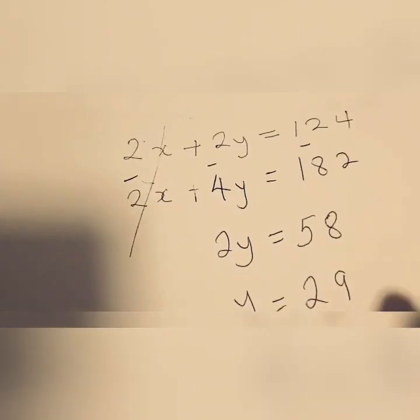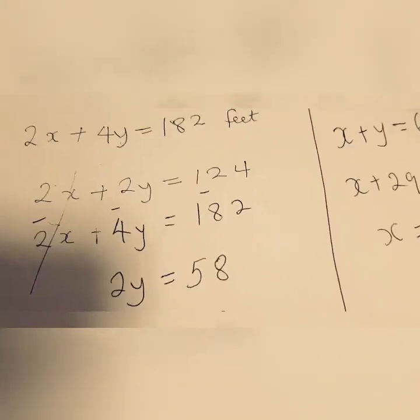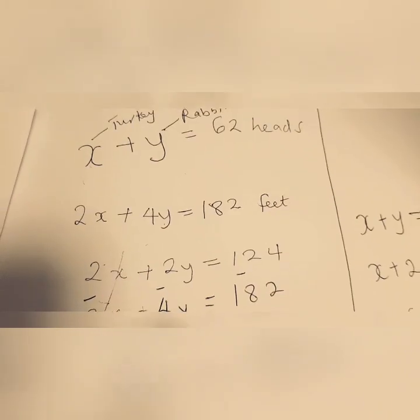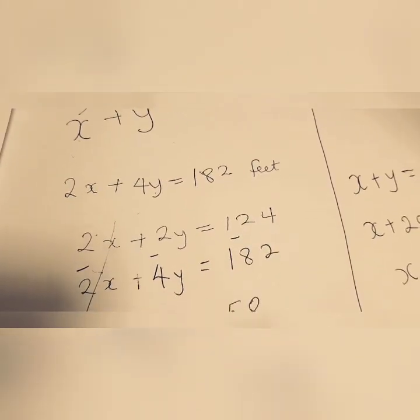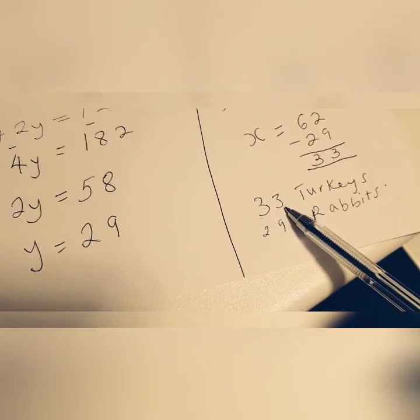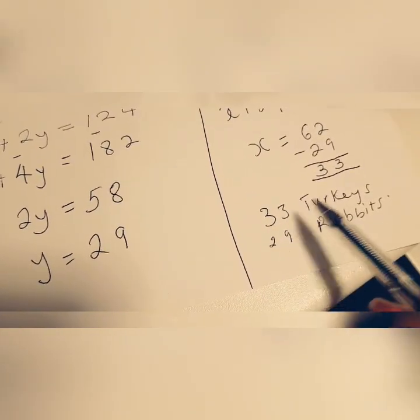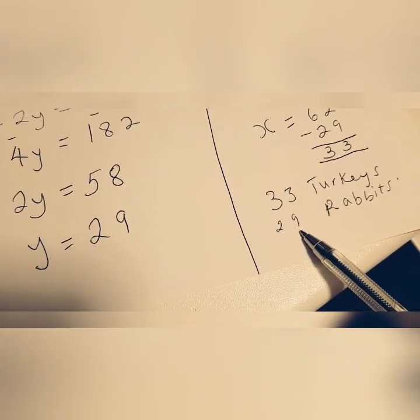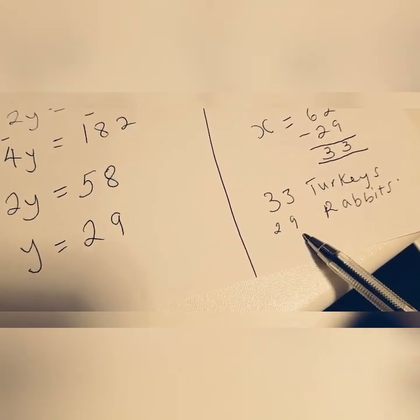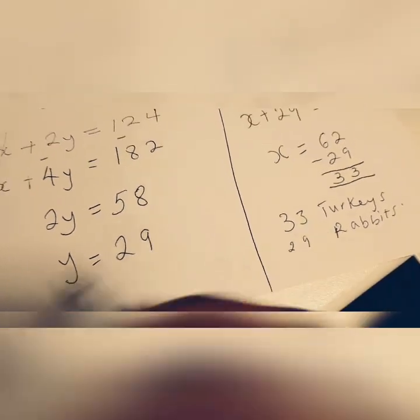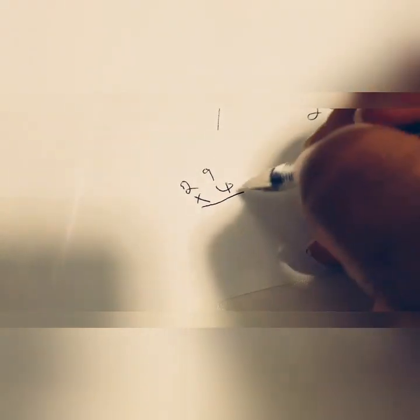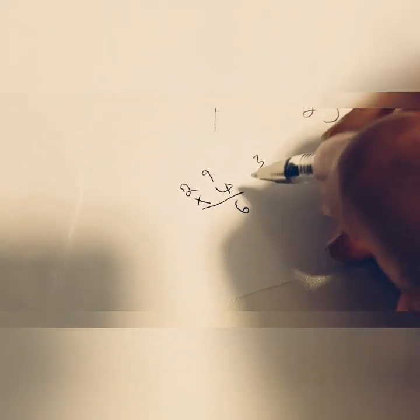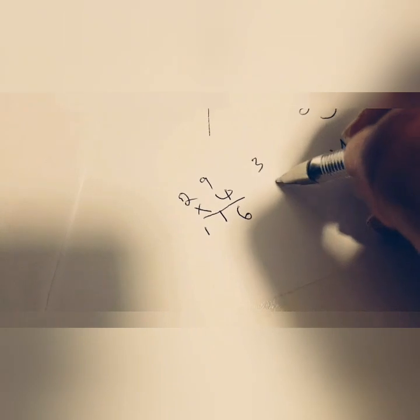Now let's check the feet. So if we have 33 turkeys, we know the turkeys have 2 feet. So 2 lots of 33 is 66 feet for the turkeys. If we have 29 rabbits, 4 lots of 29 for the feet of the rabbits will give you, 29 times 4.